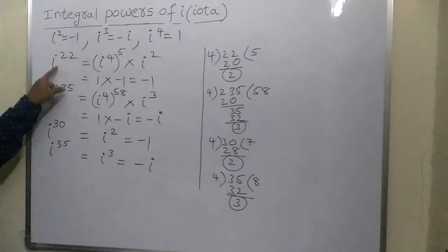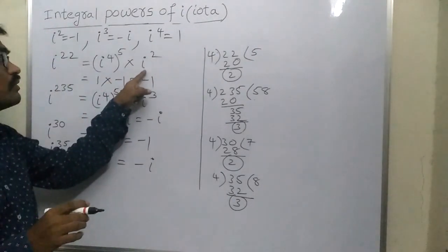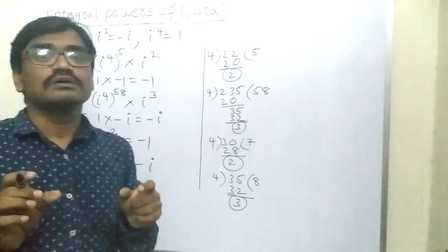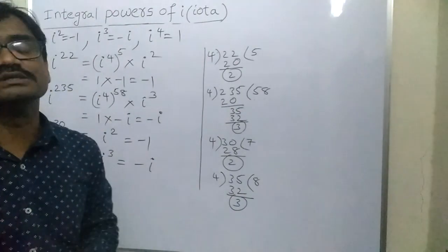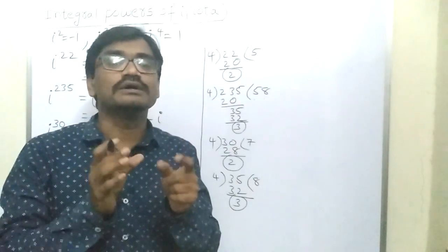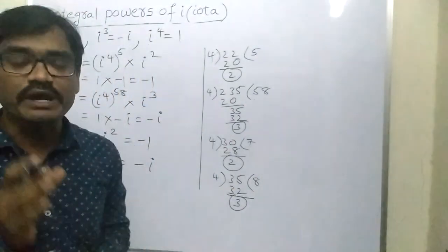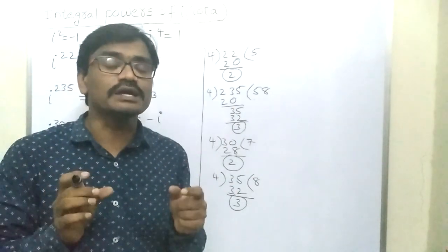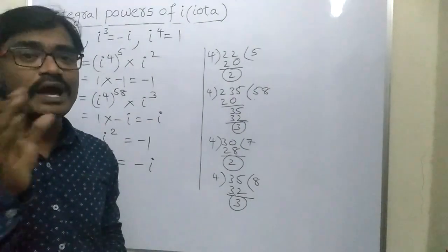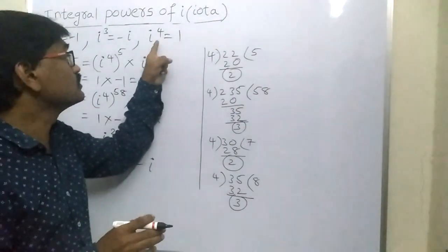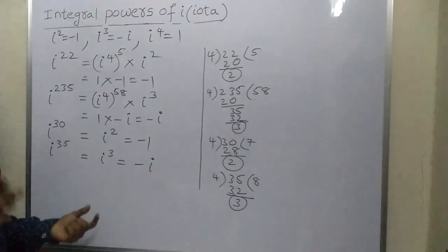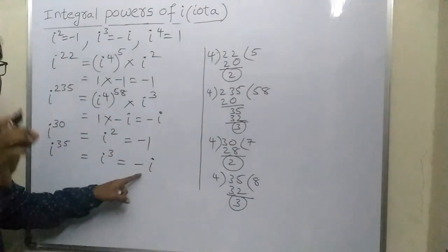So, any i raised to a power depends upon i raised to the remainder. When the power of i is not a multiple of 4, immediately find the remainder on dividing by 4. Then write i raised to that remainder — you will get its value directly. For i³⁰, write i raised to the remainder; for i³⁵, write i raised to the remainder on dividing 35 by 4.